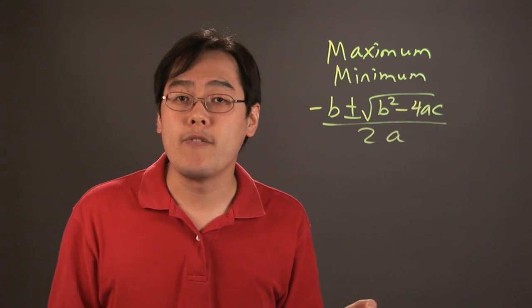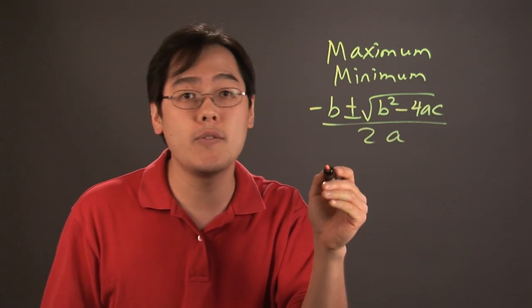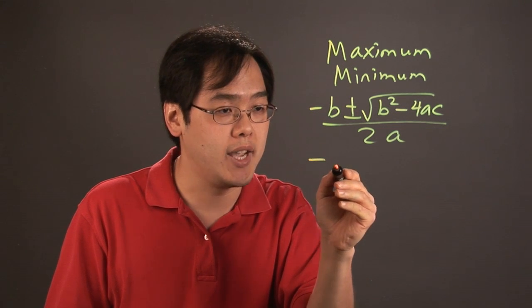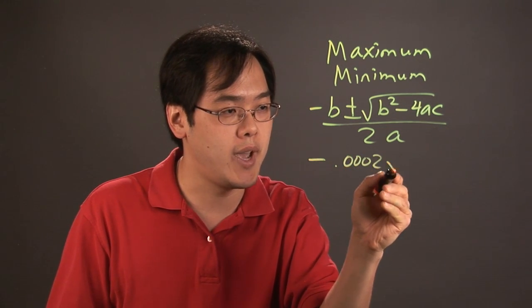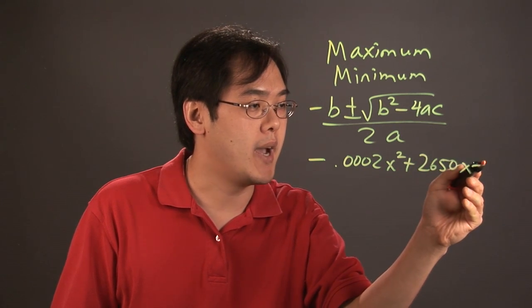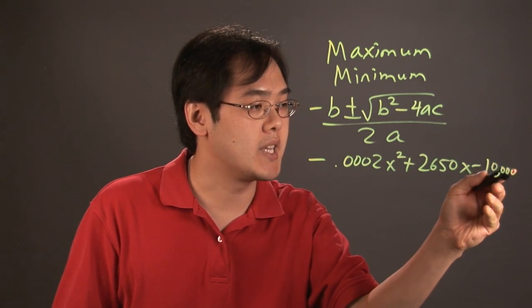And they can give you a factorable equation or they can give you a function that will require to use this formula, like if you have negative 0.0002x squared plus 2650x minus 10,000 for example.